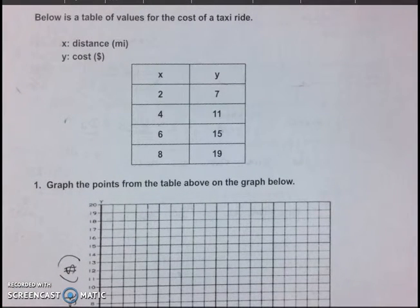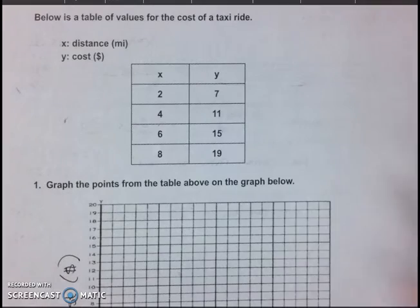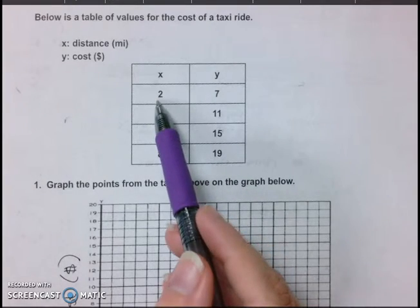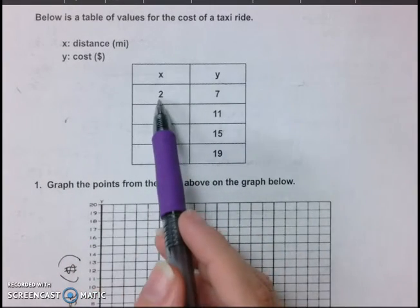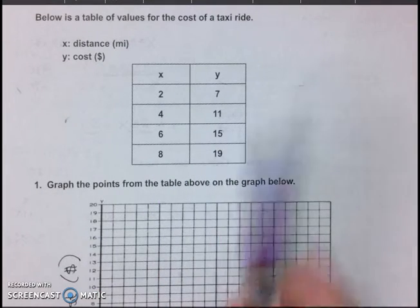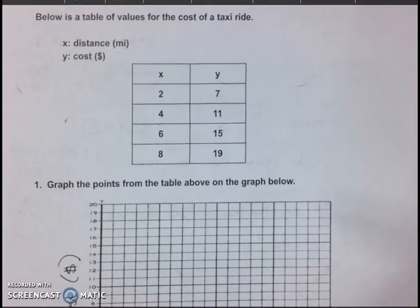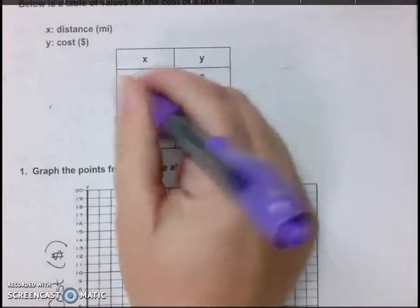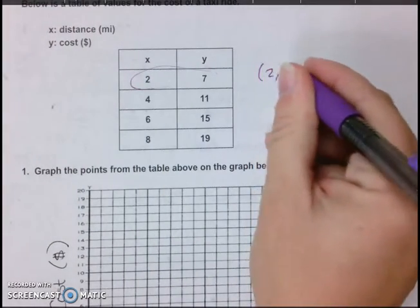Okay, on the back side, we're talking about a taxi ride. So how much it costs for a taxi? So x is distance in miles, so 2 miles would be $7, and 4 miles is $11, and to drive 6 miles is $15, and so on. So it says graph the points in the table. So remember, this is a coordinate point, coordinate point 2, 7. x is first, x is 2, y is 7.